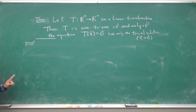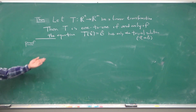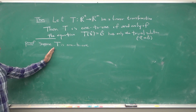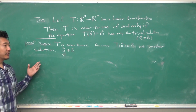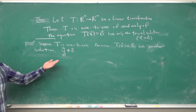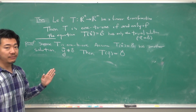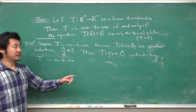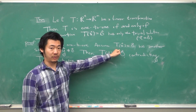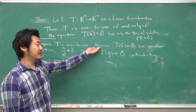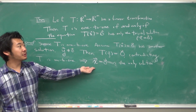We prove both directions. First, assume T is 1-to-1 and show T(X) = 0 has only the trivial solution. We use contradiction: suppose T(X) = 0 has another solution Y, which is non-zero. Then T(Y) = 0, but this violates T being 1-to-1, since the vector 0 would have two preimages — Y (non-zero) and 0. So the assumption is wrong, and X = 0 is the only solution.